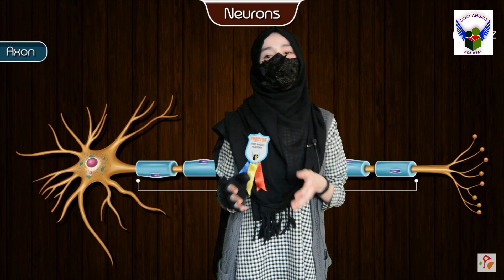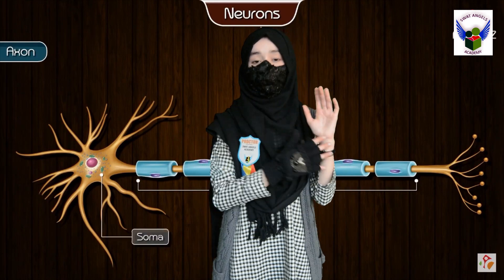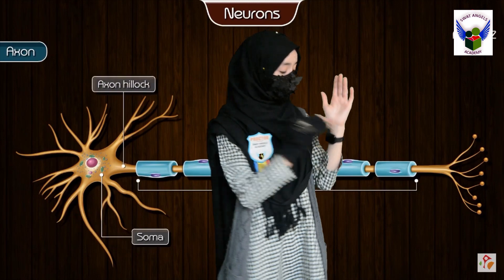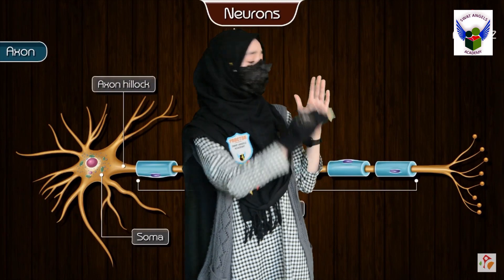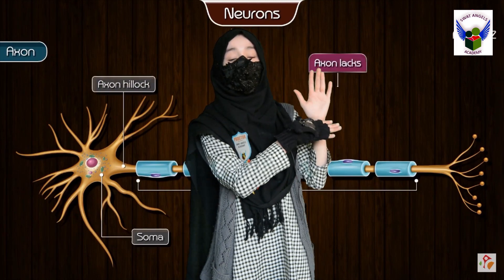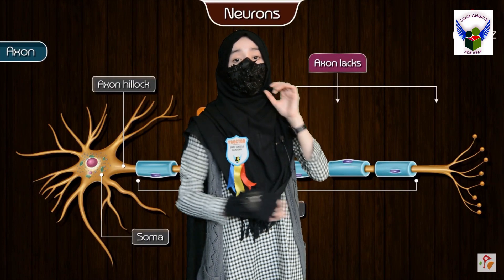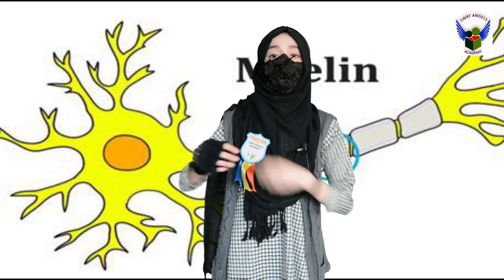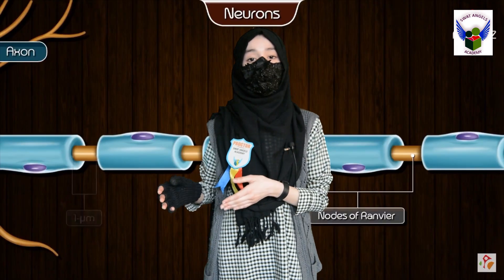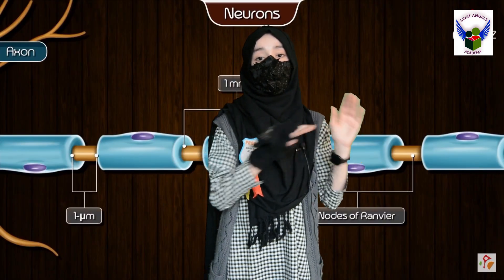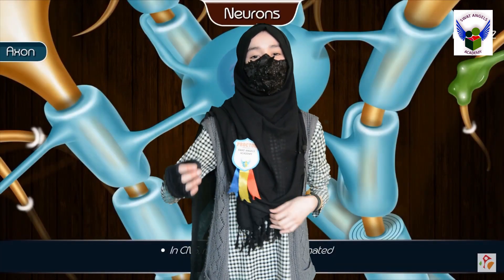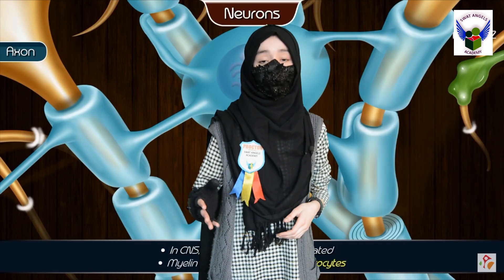Then, axons. Axons are also called nerve fibers. An axon is a long thread-like cable that extends away from the main part of the cell. An axon is covered by a myelin sheet, and this sheet increases the rate and speed of impulse transmission. This sheet is made up of fatty materials and is broken down at different intervals called nodes of runway. The function of axons is to carry nerve impulses away from the cell body.